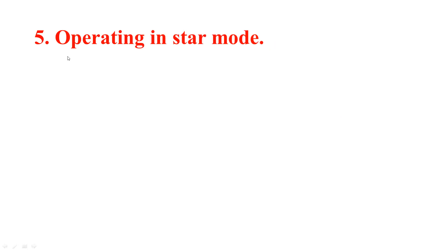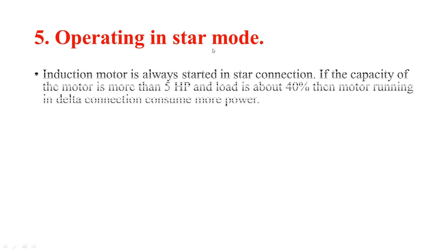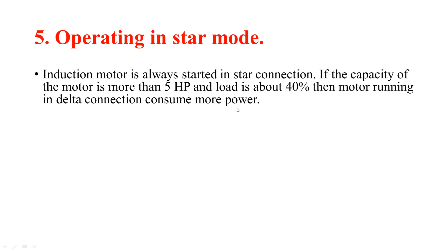Point number five is operating in Star Mode. We are going to operate in Star Mode. Induction motor is always started in star connection. If the capacity of the motor is more than 5 HP and the load is about 40%, then the motor running in delta connection consumes more power.